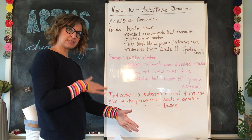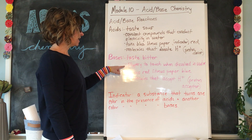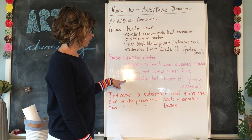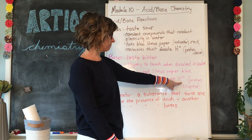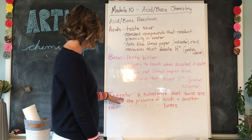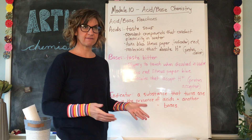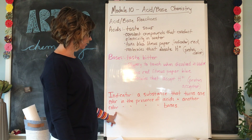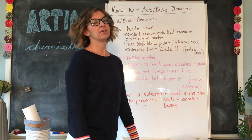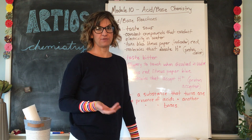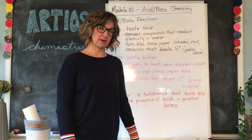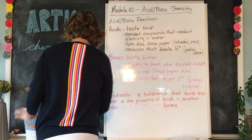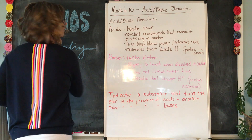On the flip side, bases taste bitter, they are slippery to the touch when dissolved in water, they turn red litmus paper blue, and they are molecules that accept the H+ ion or a proton — so bases are called proton acceptors. An indicator is a substance that turns one color in the presence of acids and another color in the presence of bases. Litmus paper is an indicator; a natural one is cabbage juice, used in another experiment in this module.